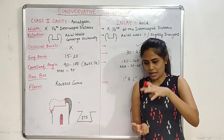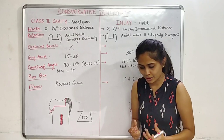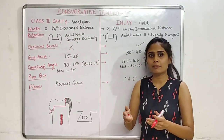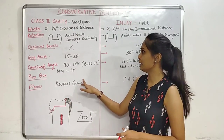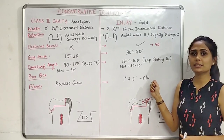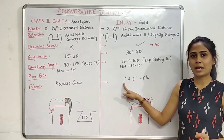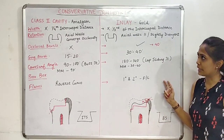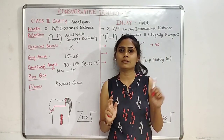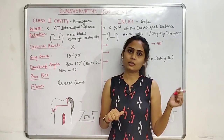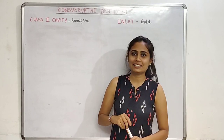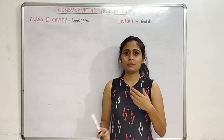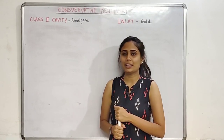For flares: when viewing the tooth occlusally from the top, the Class 2 cavity for amalgam has a reverse curve — that is the flare. For the inlay cavity, there are primary and secondary flares on the facial and lingual surfaces of the tooth. That covers all the differences between the Class 2 cavity for amalgam and the inlay cavity for gold. I hope you like this video — don't forget to subscribe and hit the like button and bell icon.